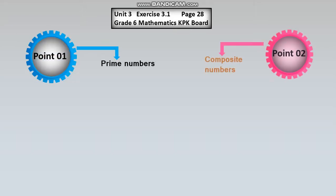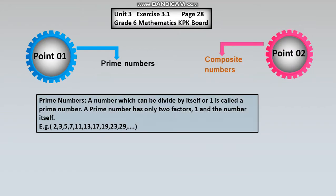Isme question number one jo hain: 'Which of the following numbers are prime and which of them are composite numbers?' To hum ne prime aur composite numbers discuss karne hain. Prime number kaise kare, composite kaise kare. A number which can be divided by itself or one is called a prime number.